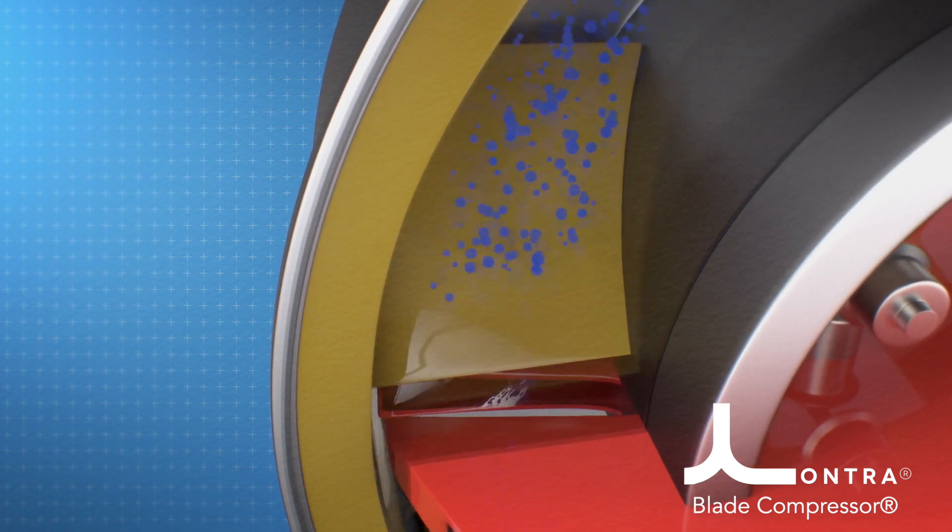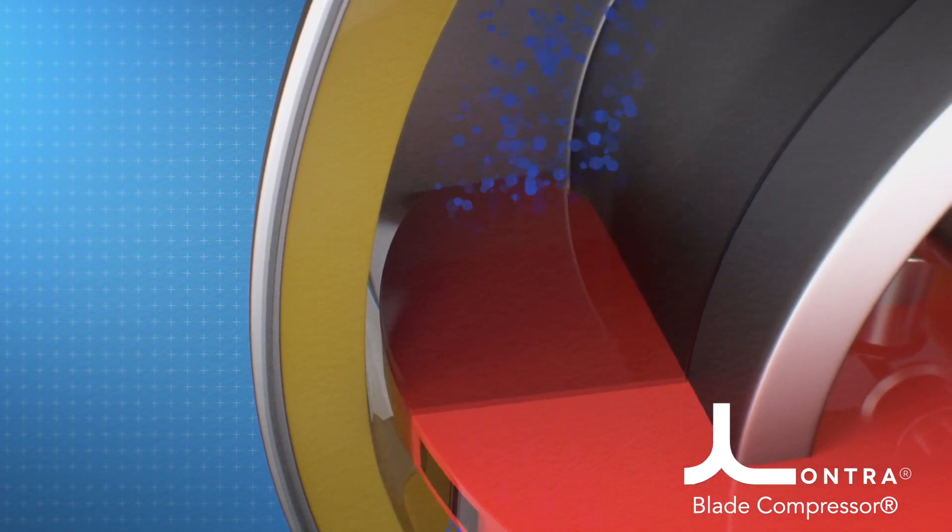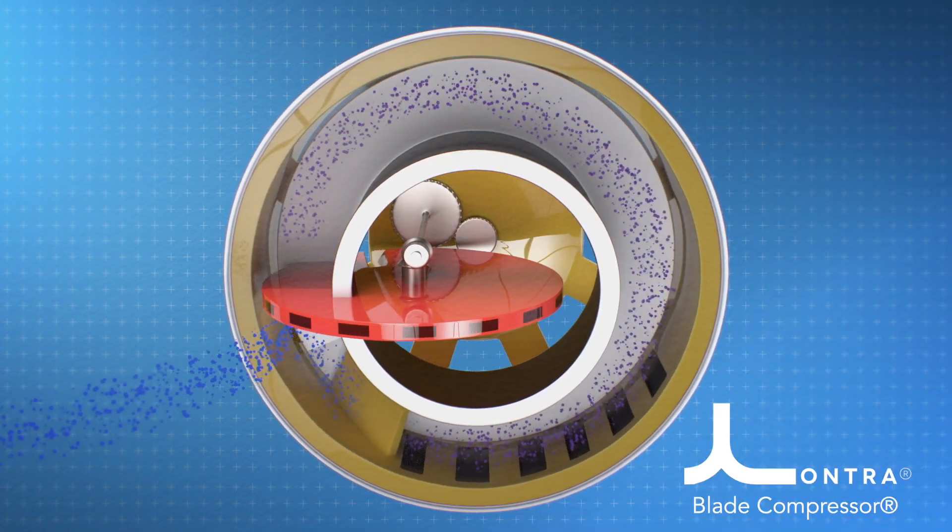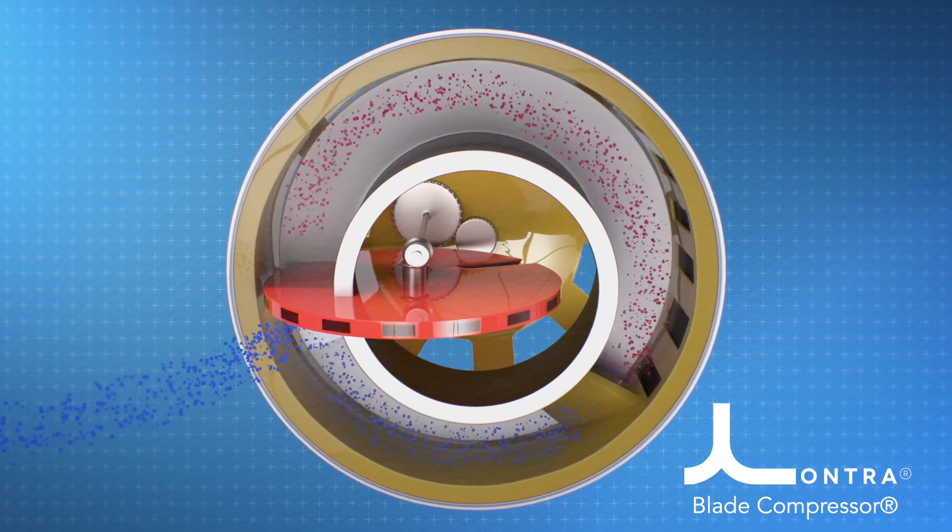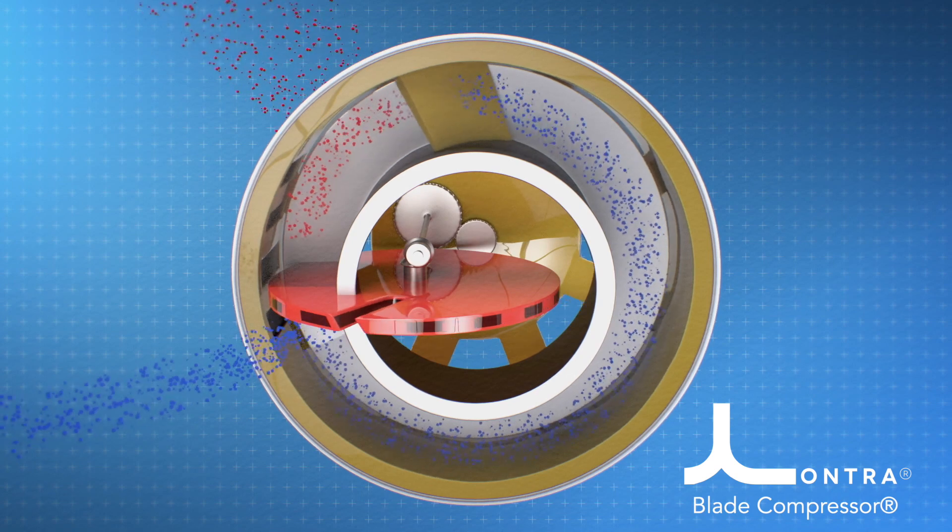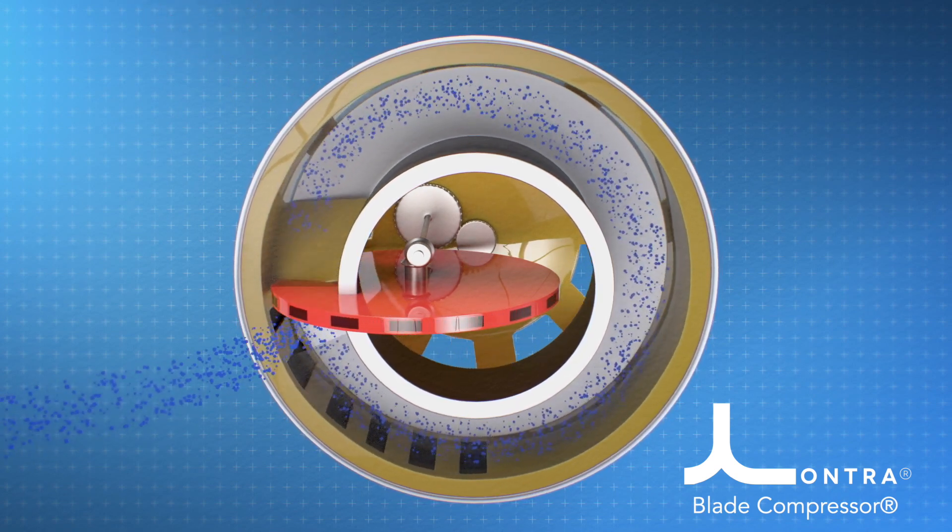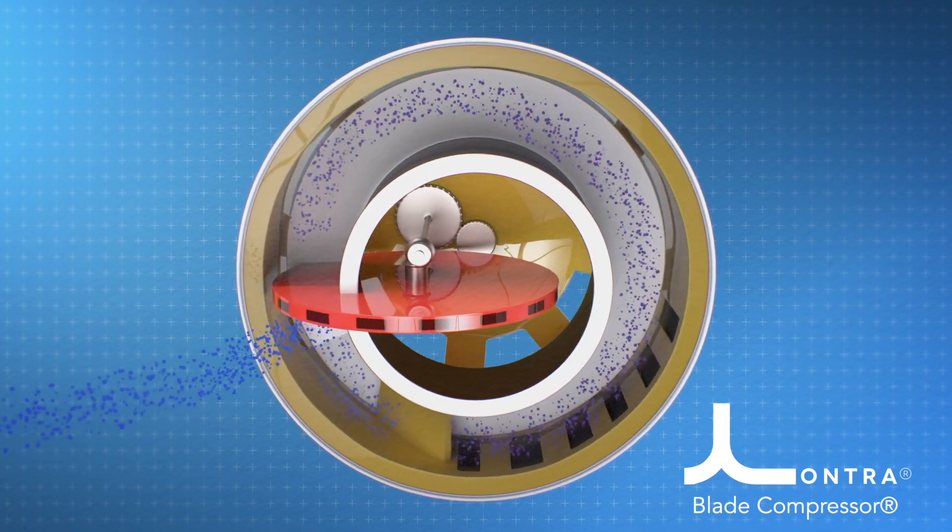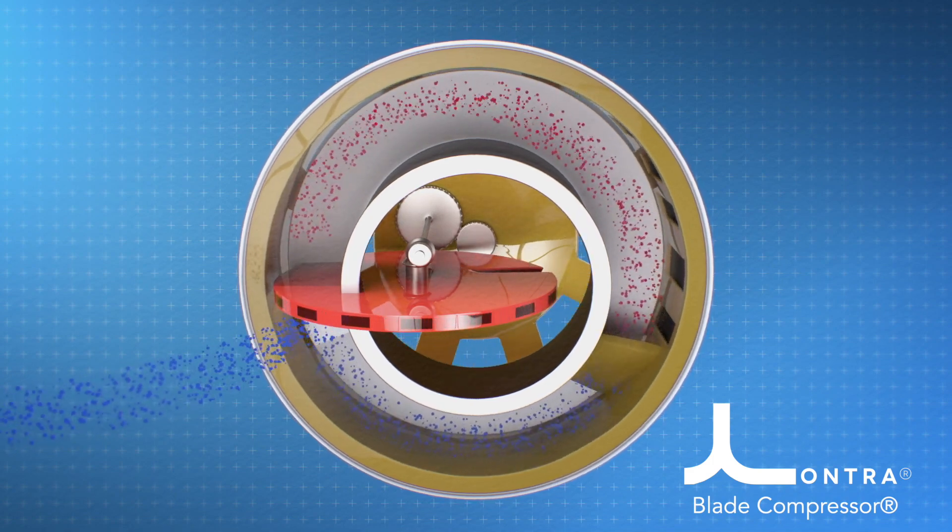As the blade passes through the disc, it catches up to the gas that was drawn in behind and compresses it in front of the blade. Compressed gas leaves through a large low-loss port while gas for the next cycle is drawn in behind, and the cycle continues.